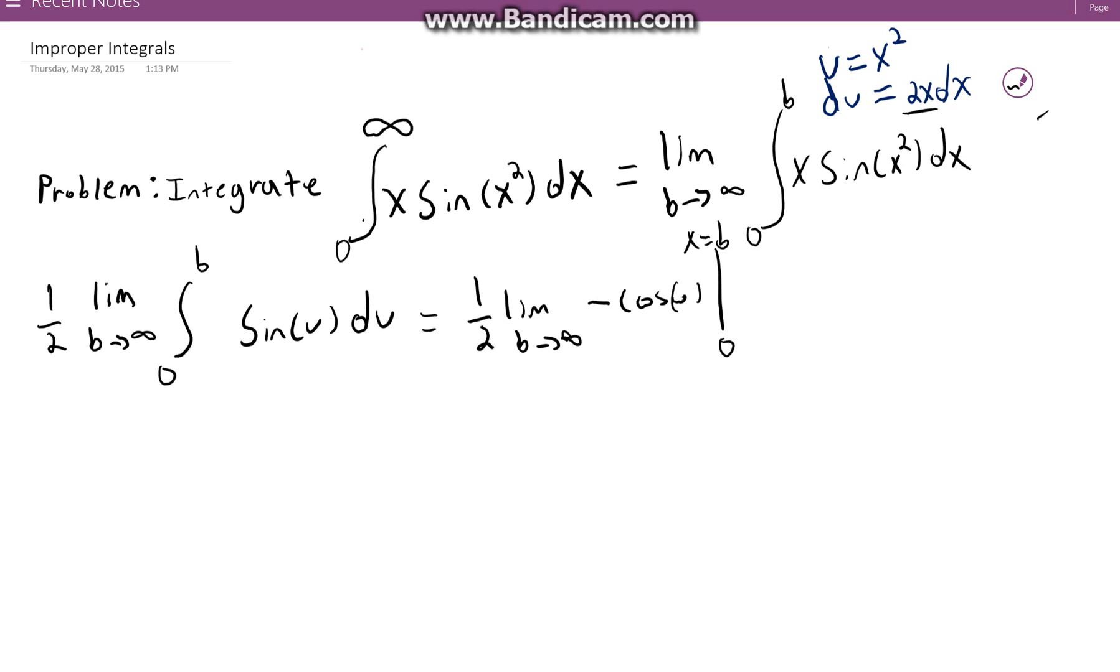Now of course this is x equals zero and x equals b. Now we see here there's an inconsistency because we have cosine of u and yet we're evaluating at the endpoints that are in terms of x. So I'm just going to rewrite u in terms of x, and remember that u is equal to x squared. So let me rewrite this: minus the cosine of x squared evaluated from zero to b.